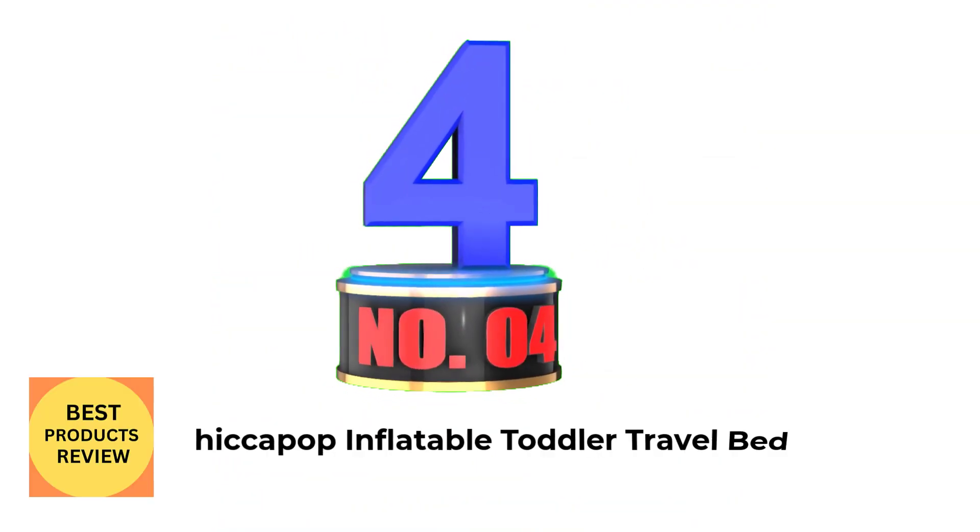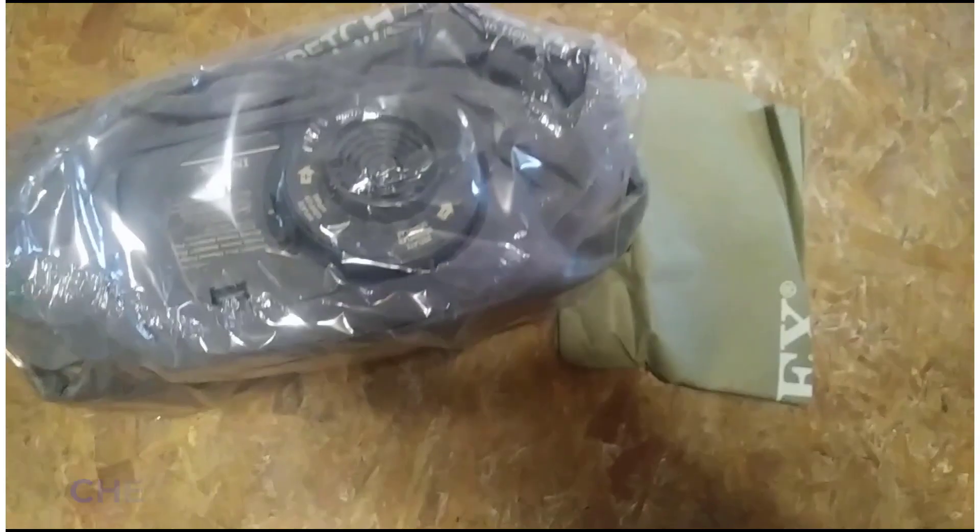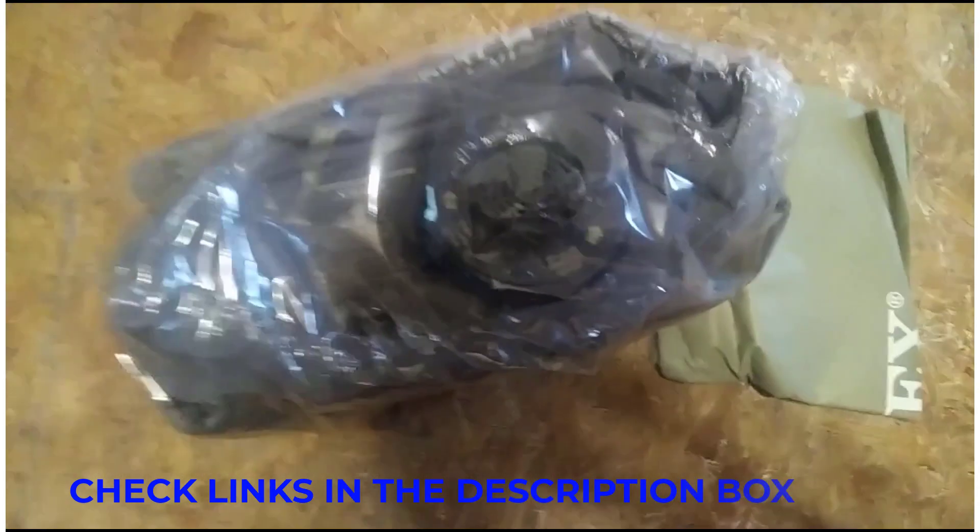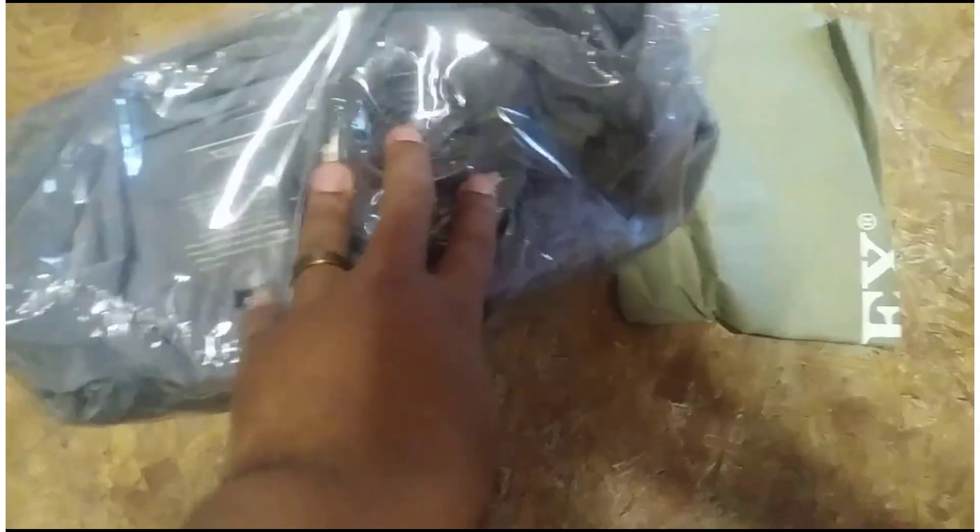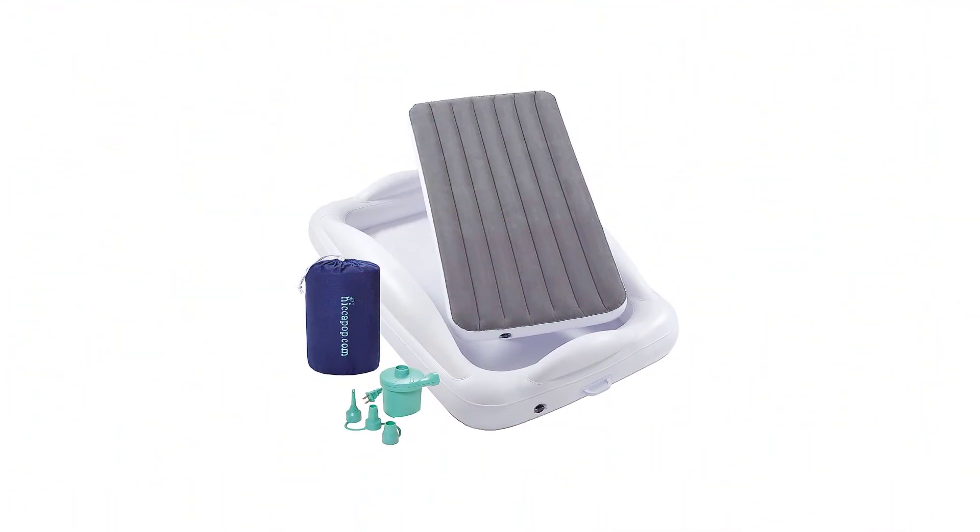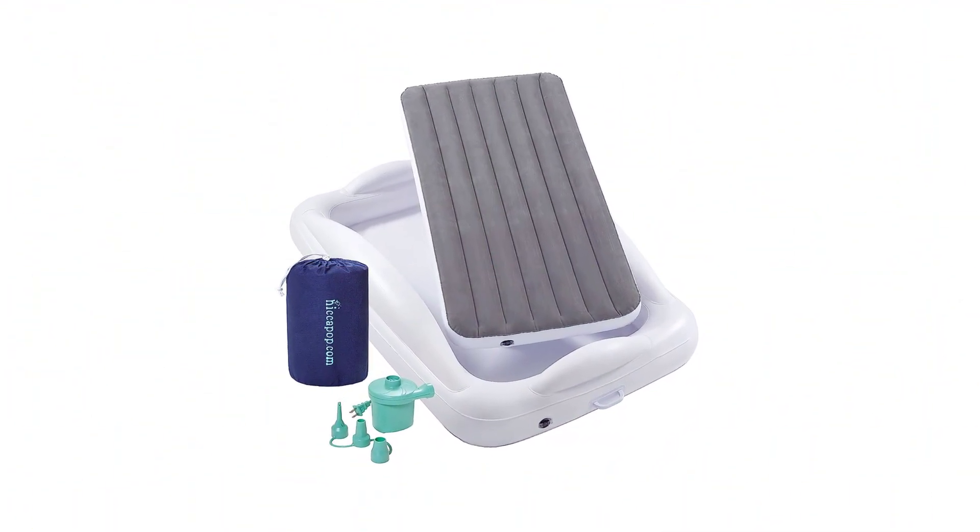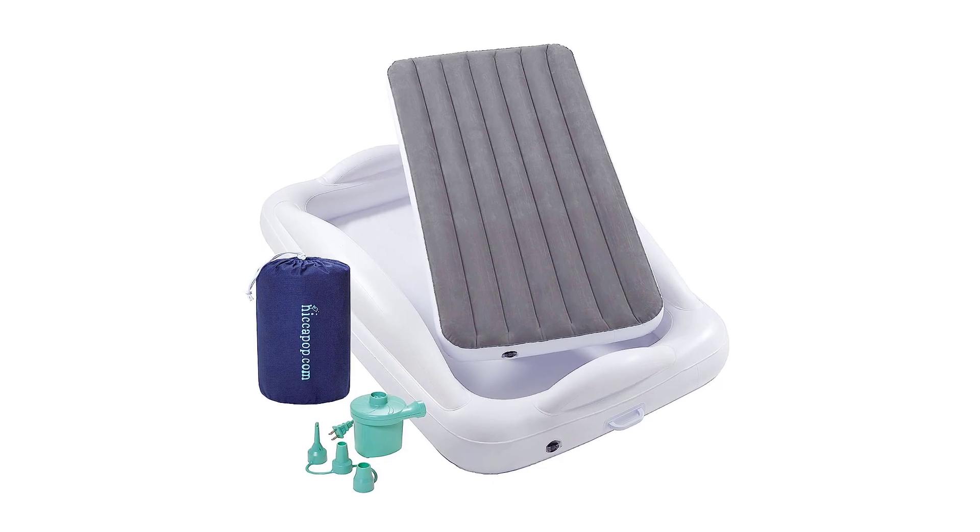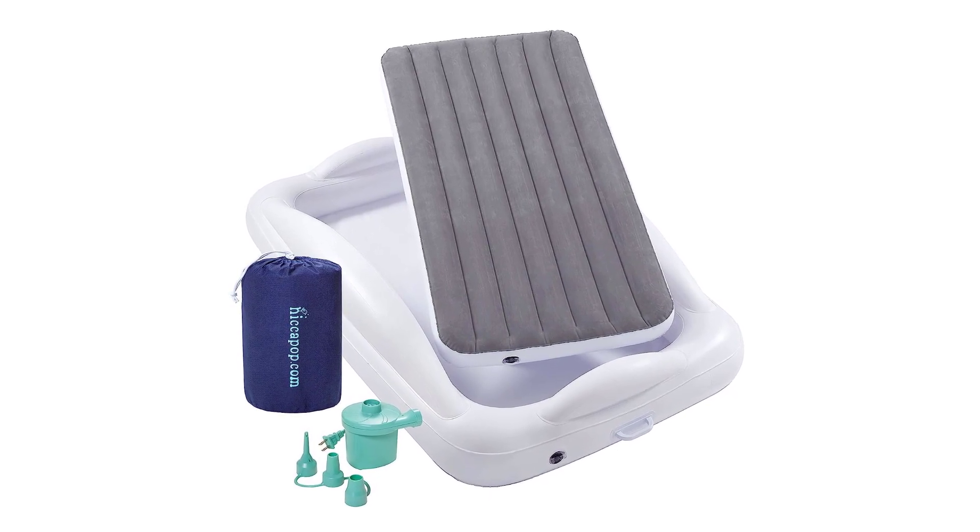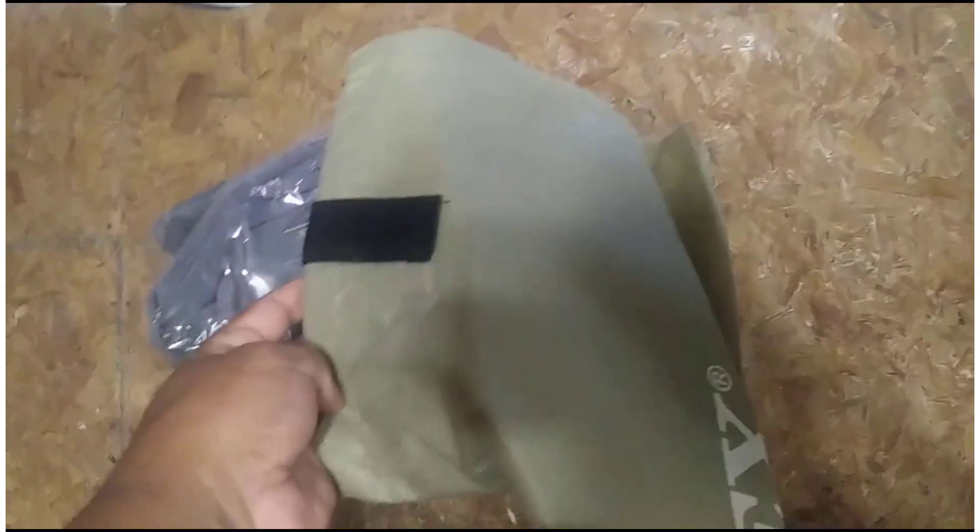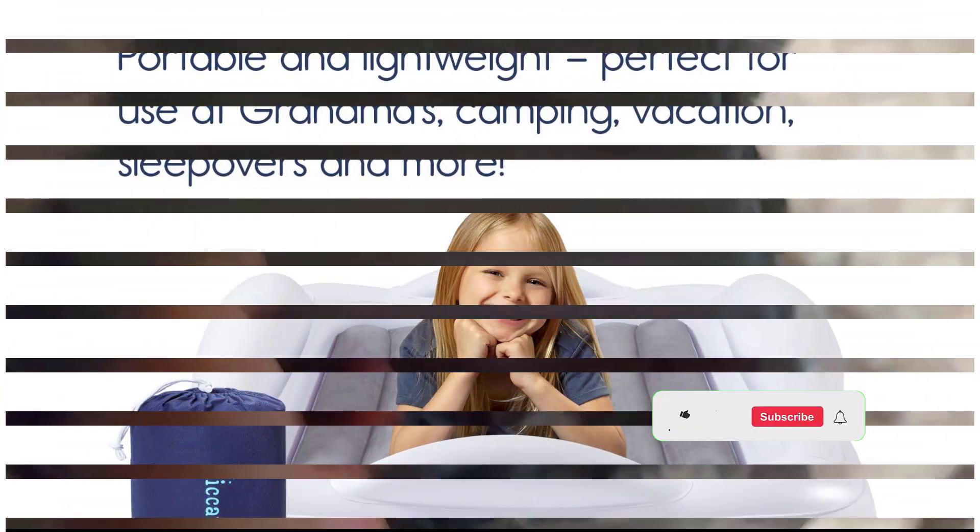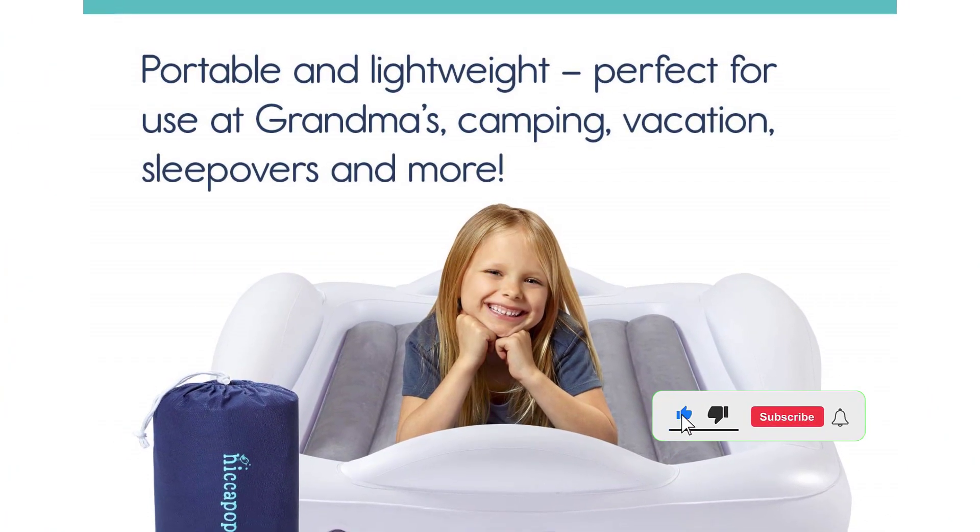Number 4: Hiccapop Inflatable Toddler Travel Bed. Designed with toddlers in mind, this two-piece air mattress has an inner mattress that fits into an outer frame that's kind of reminiscent of an inflatable swimming pool. The effect is to add bumpers on all four sides to prevent kids from rolling onto the floor while they sleep. It comes recommended by Vox Media Associate Director of Project Management Danielle Van Cleave, who points out that it also fits perfectly onto the Slumber Pod, a travel-friendly blackout pop-up tent for kids, which is especially useful in shared hotel rooms.